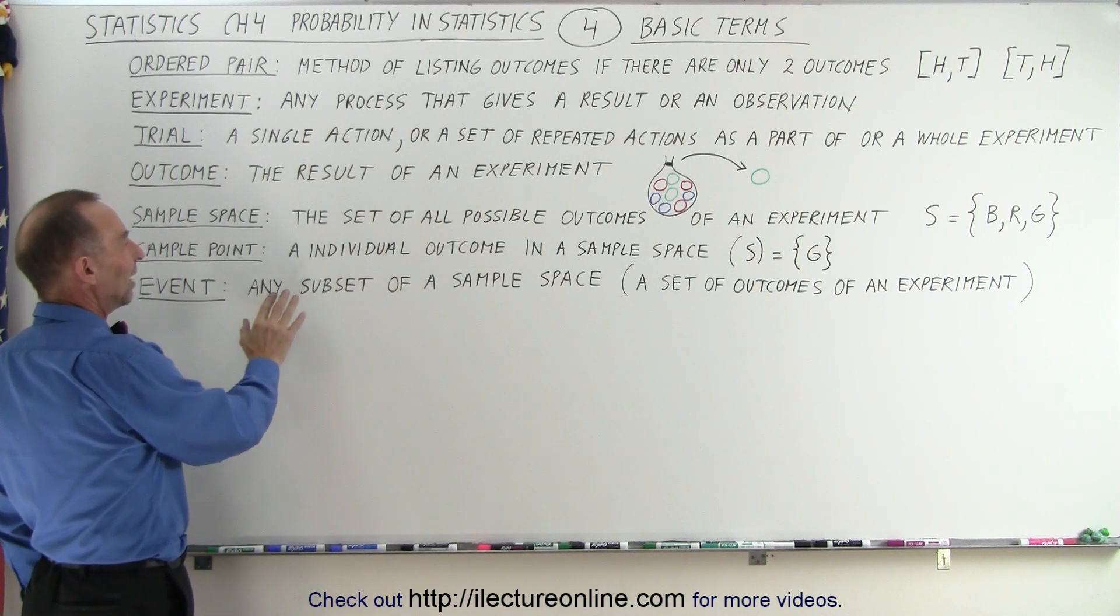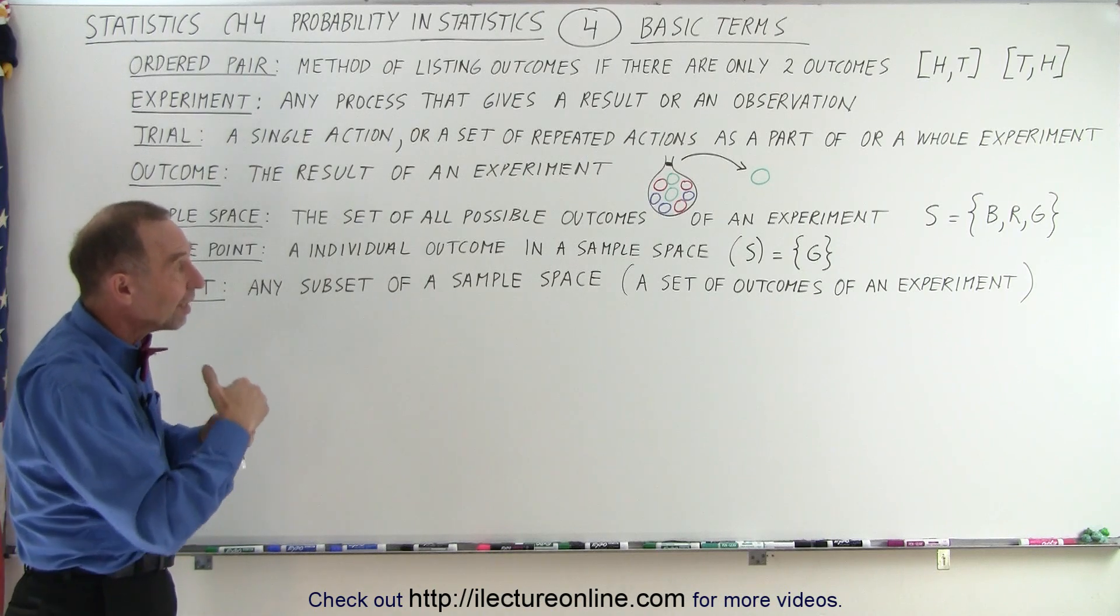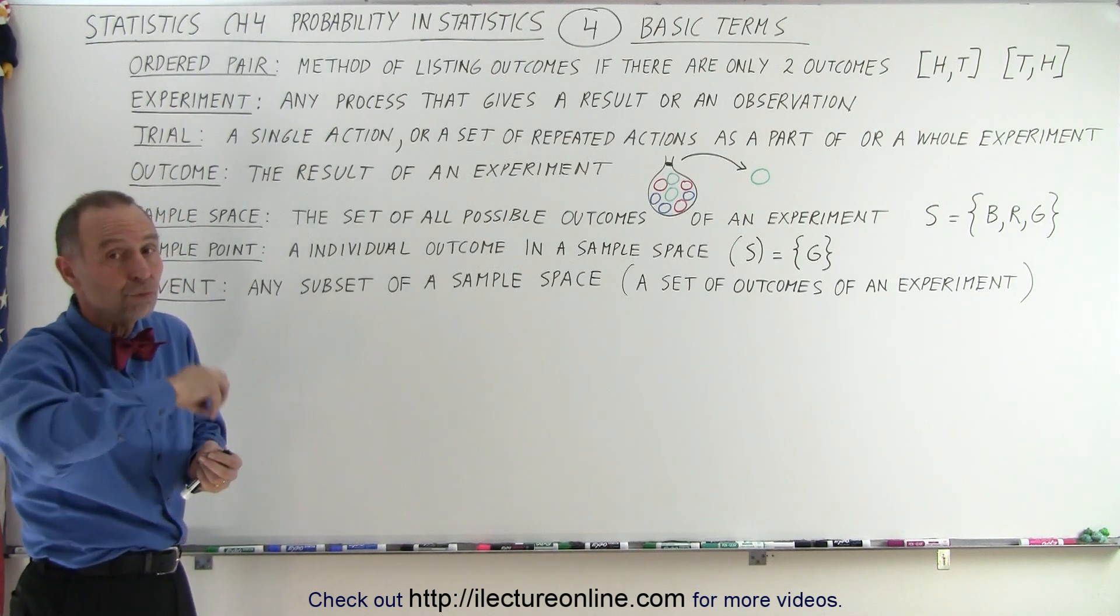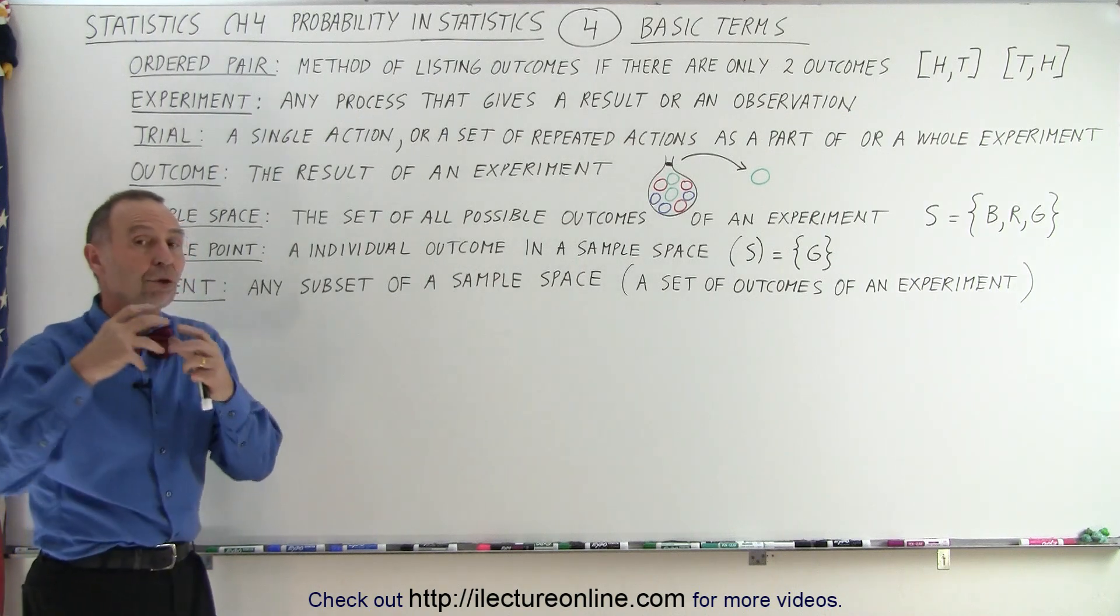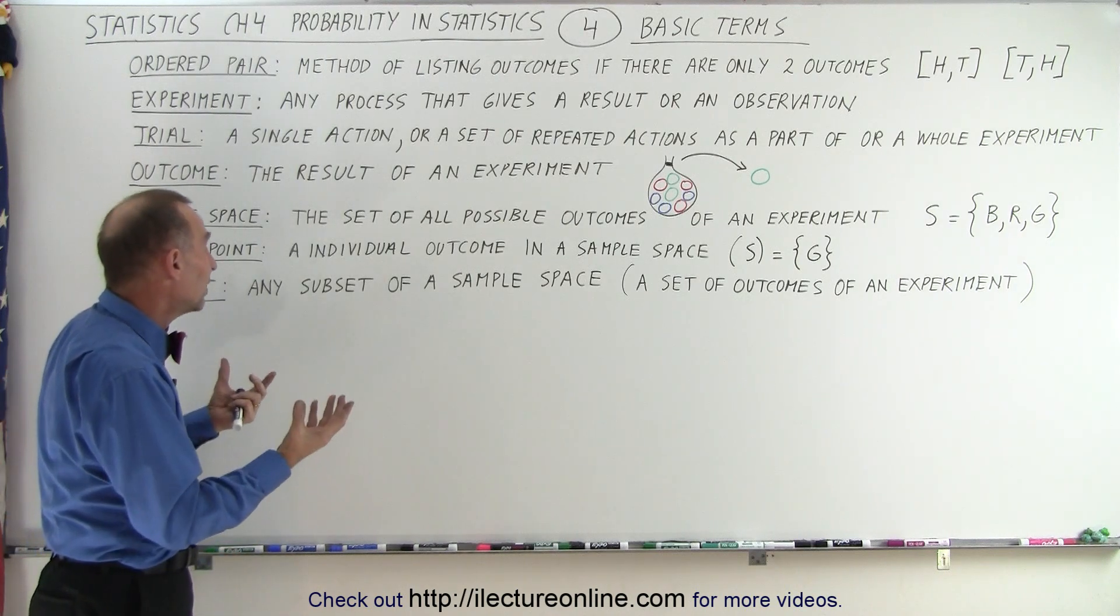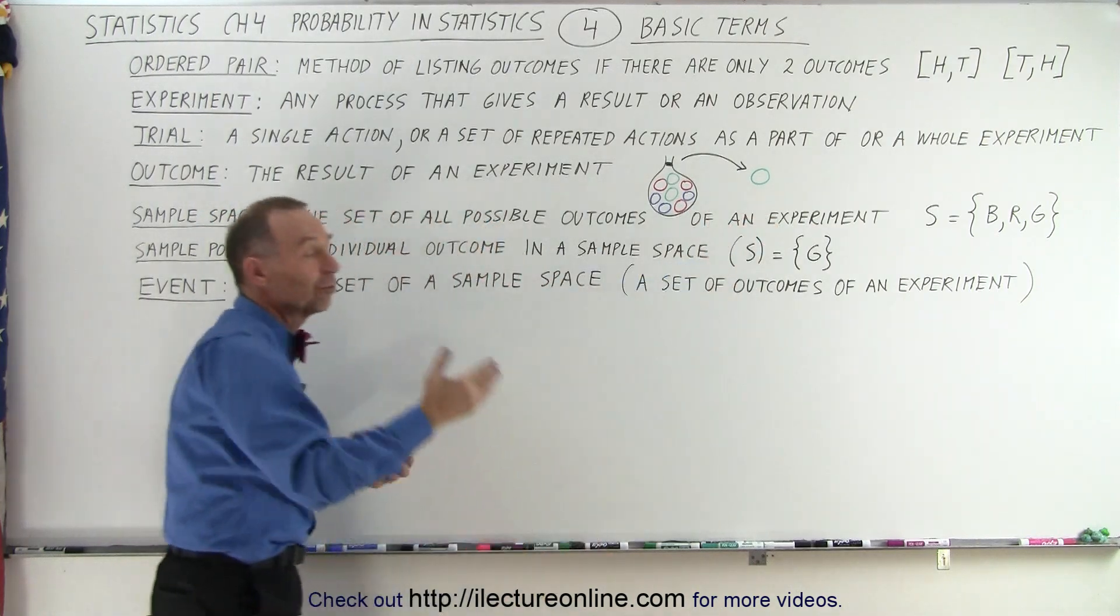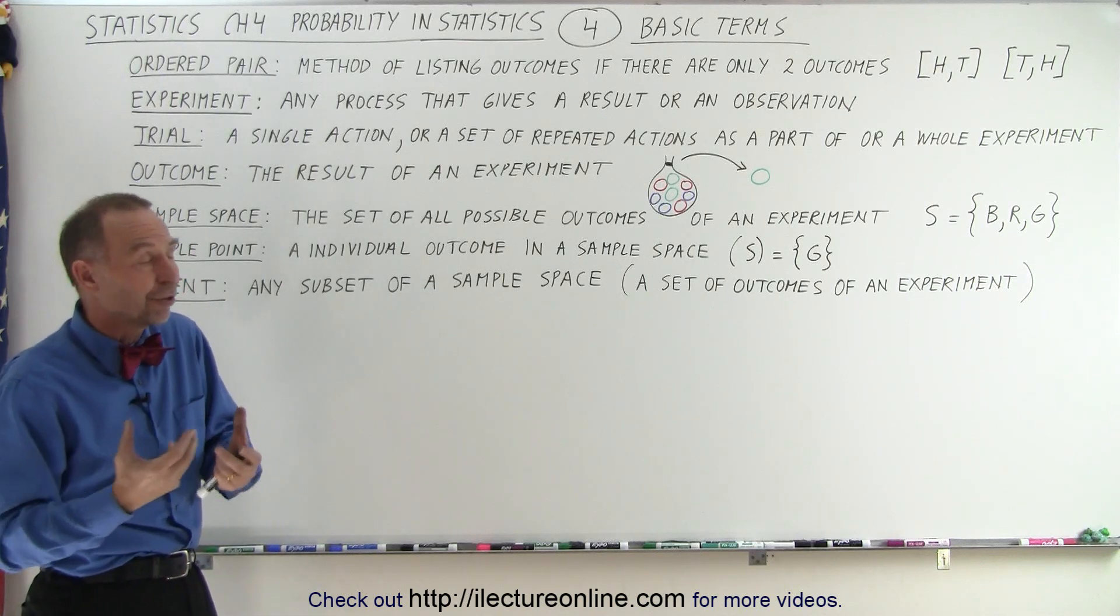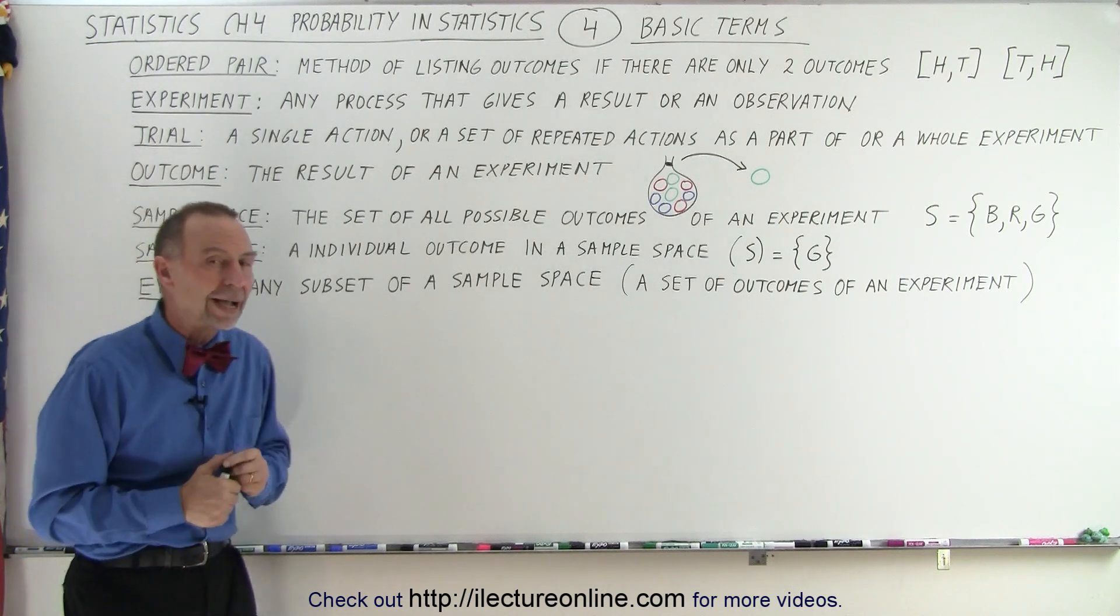And finally, the word event is any subset of a sample space, or we can define it as a set of outcomes of an experiment. So in this case, for example, I could grab two marbles. I got a red one and a green one. That would be an event. I grabbed two marbles, and I had a set of outcomes, two outcomes in this case. They happen to be different. And it would be a subset of a sample space, because the sample space was, the possibility was blue, red, and green. If I only took two marbles, I only got two of the three different possibilities out of that particular sample space. And so that's how we define an event.